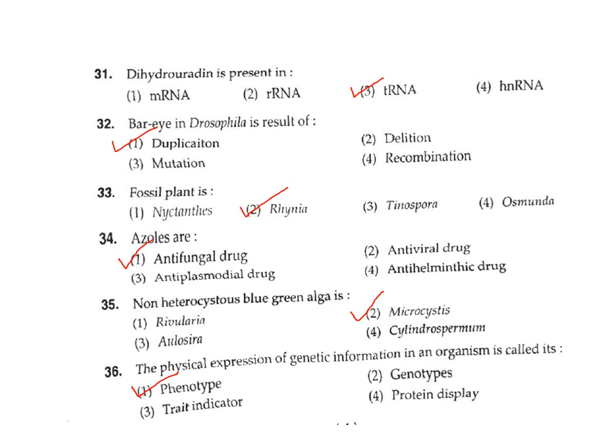Microcystis is the non-heterocystous blue-green alga, Option 2. Question 36: The physical expression of genetic information in an organism is called what? Whatever genetic information is present in DNA through genes, its physical expression gives rise to characters — this is called the phenotype, which is what we can observe. Correct answer Option 1.